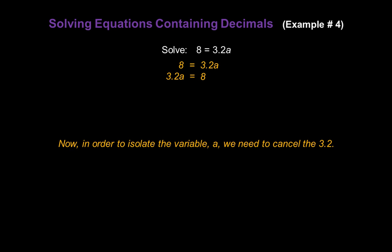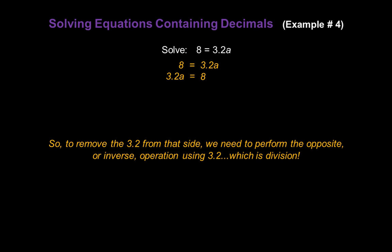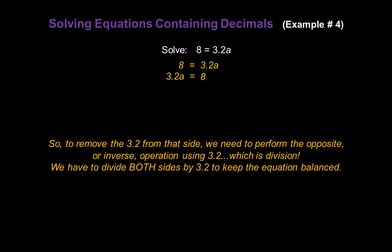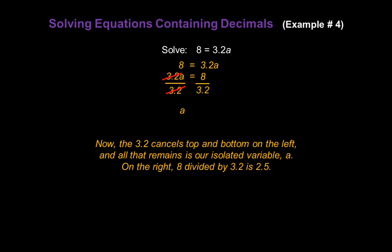Now, in order to isolate the variable a, we need to cancel the 3.2 that's with it. What operation is being performed with the 3.2? If you said multiplication, that's correct — the left side reads as 3.2 times a. So to remove the 3.2 from that side, we perform the opposite or inverse operation, which is division. We divide both sides by 3.2 to keep the equation balanced. The 3.2 cancels because there's one on top and bottom in our fraction on the left, and all that remains is our isolated variable a. On the right, we divide 8 by 3.2, which gives us 2.5. So a equals 2.5 is our answer.